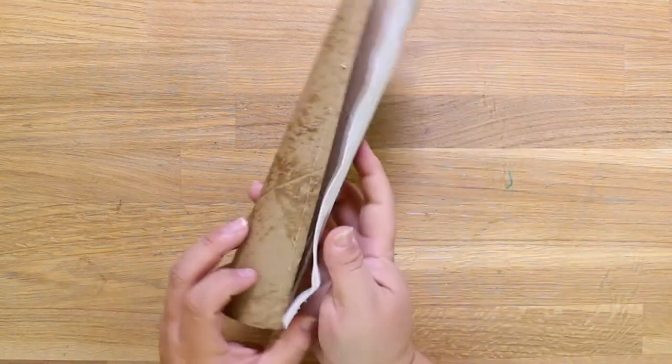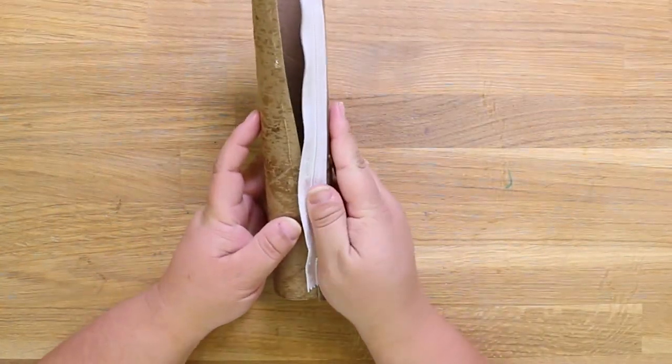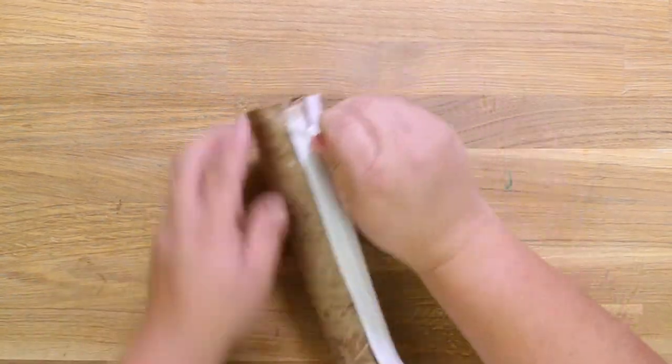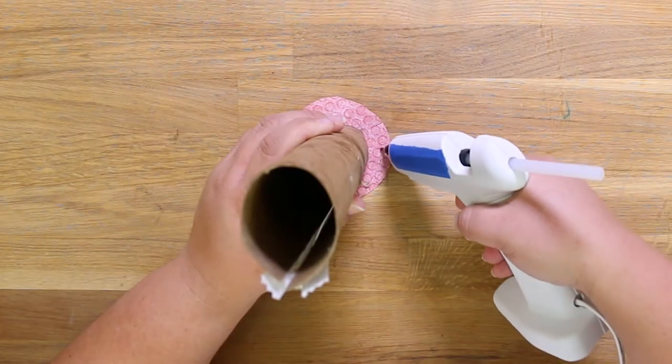Repeat on the other side to close the tube. This is what's going to turn it into an actual case. Make sure that the zipper is totally functional. If it doesn't work, go ahead and peel it off and then re-glue it or reposition it.